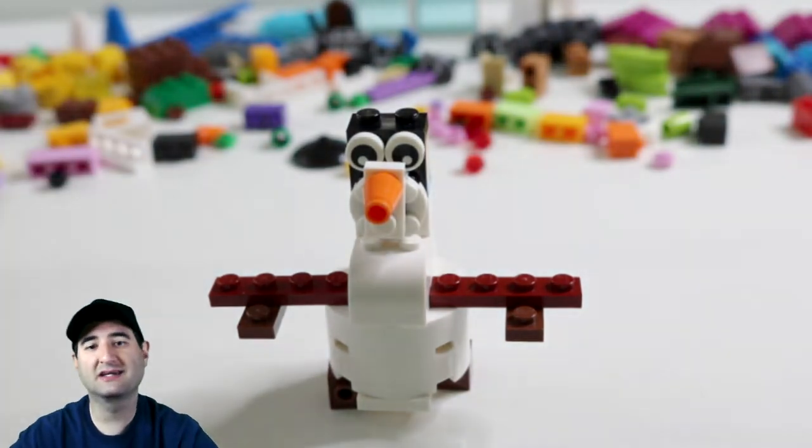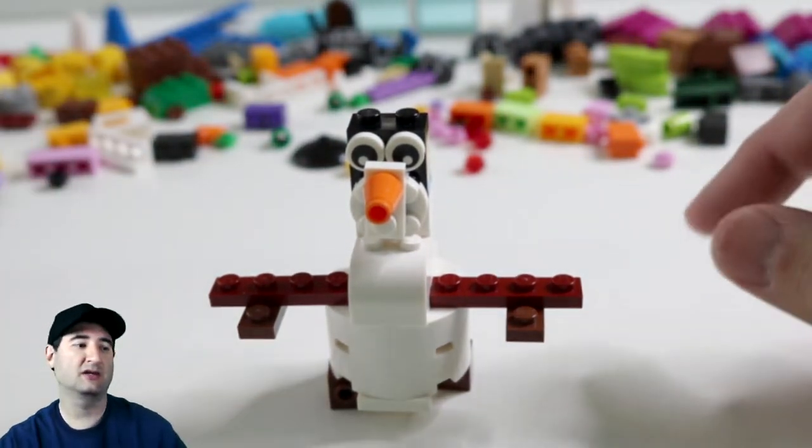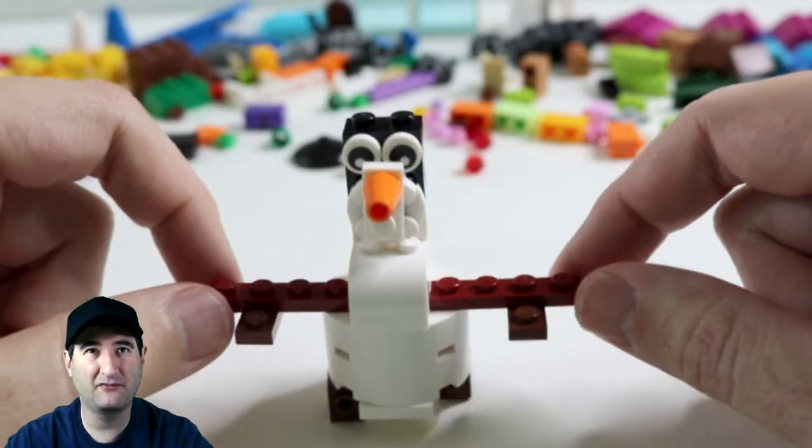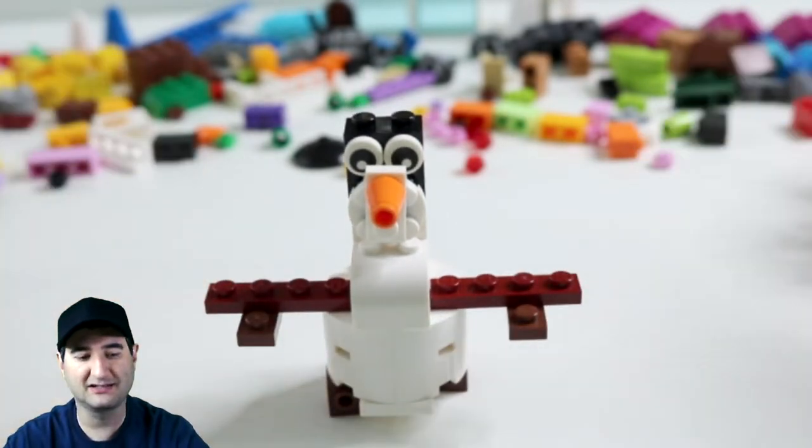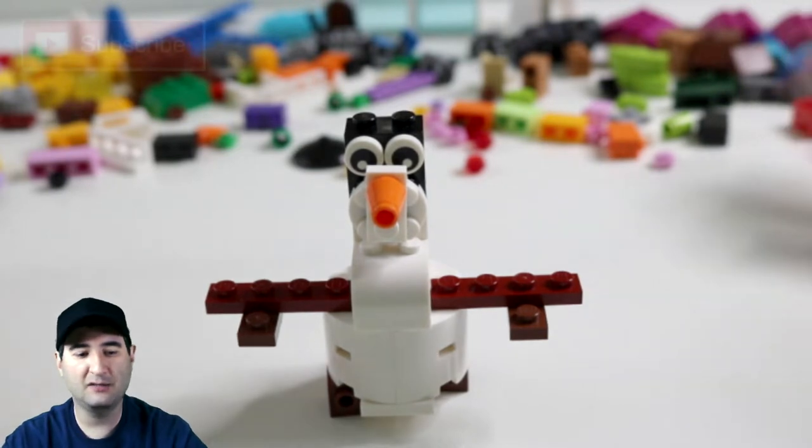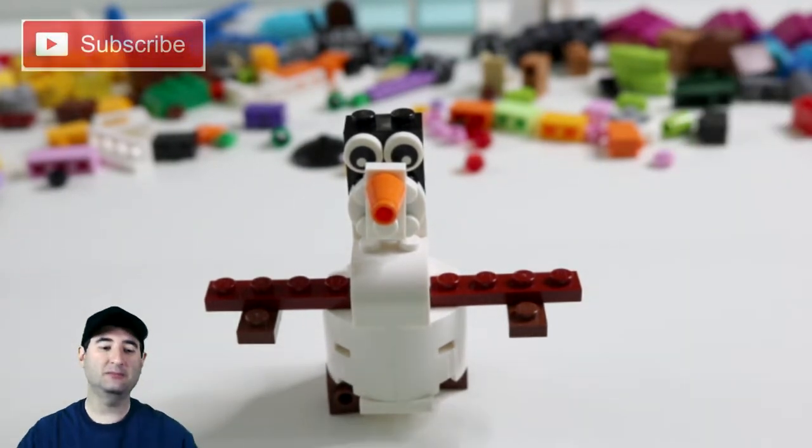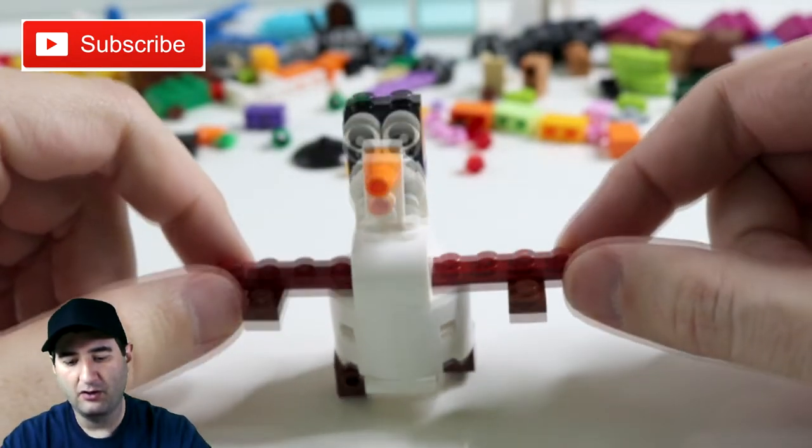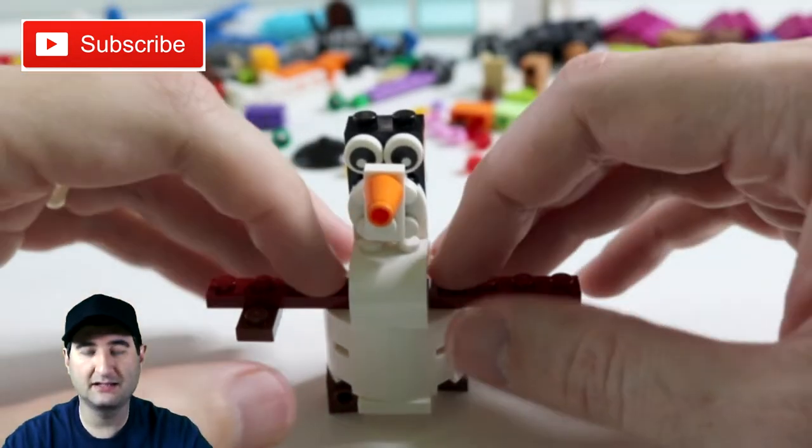If you want to play along, there's a kit link down below that will take you to an Amazon affiliate link, and you can buy this kit for about $15. It's just a regular classic kit, and it has a lot of pieces. And you can see, out of the last almost 100 videos, I have built 100 different things out of that same kit.